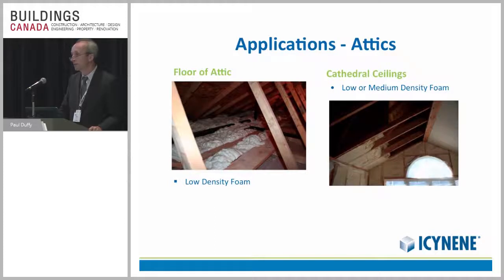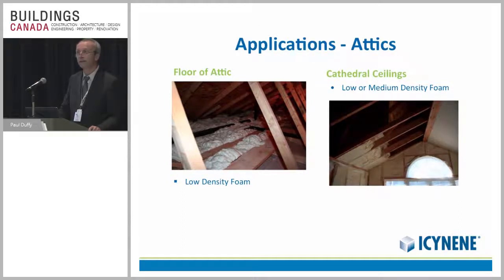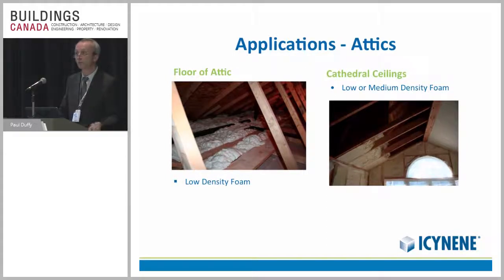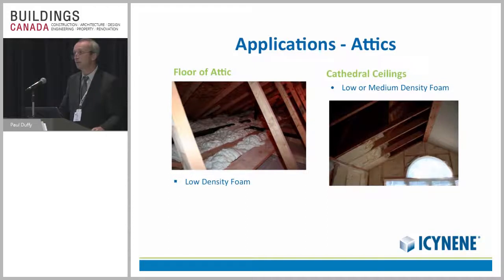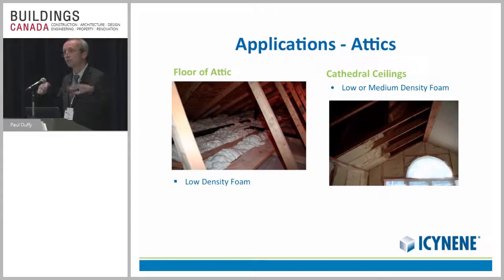One caution: in areas where you're using peel-and-stick membranes throughout the field of the roof, you've got an extremely good vapor barrier on the cold side of that assembly. Most shingle assemblies can allow moisture to move through them and we don't see a problem, but I would be very cautious about doing an unvented roof assembly where you put a very good vapor-restrictive layer on the extreme outside of the assembly. You're playing a game of Russian roulette with that, and you don't want to do that.